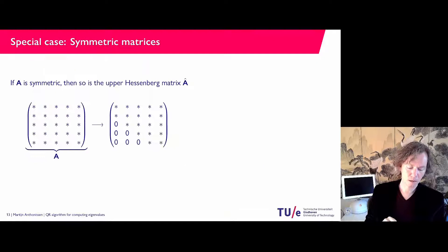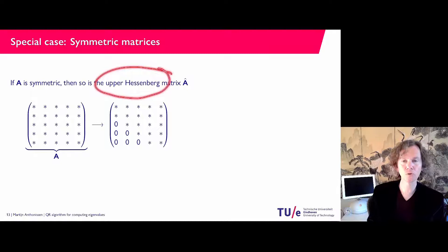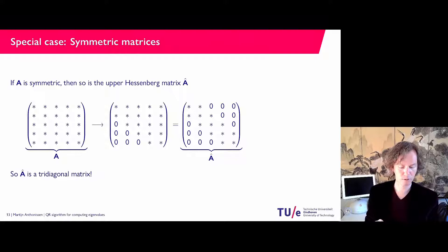For symmetric matrices, the QR method is even better. Looking at the upper Hessenberg form of a symmetric matrix, all the zeros below the sub-diagonal are mirrored above, giving a matrix with only three diagonals. So Â for a symmetric matrix is a tridiagonal matrix, which is cheap to store and compute with.